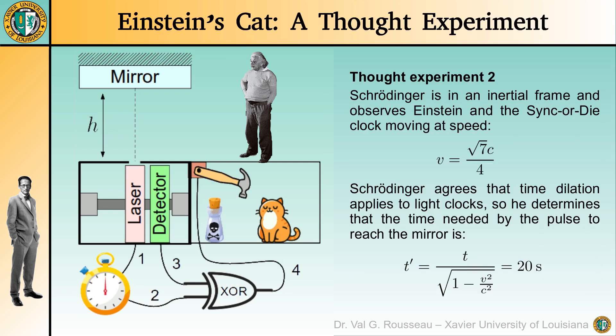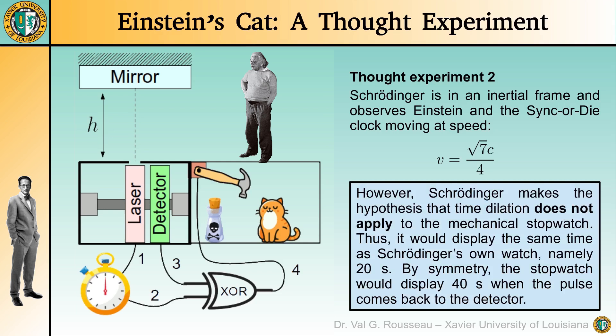The second experiment is the same as the first one, but this time it is Schrodinger who makes the observation from an inertial frame in which both Einstein and the sync-or-die clock are moving at speed v, which we choose to be equal to square root of 7 quarters of the speed of light. Schrodinger knows how simple the derivation of the time dilation formula is, so he agrees with it and finds out that it takes a time of 20 seconds for the pulse to reach the mirror. However, he makes the hypothesis that time dilation does not apply to the stopwatch. Thus, according to this hypothesis, the stopwatch should read the same time as Schrodinger's own watch when the pulse reaches the mirror, namely 20 seconds. By symmetry, the stopwatch should display a value of 40 seconds when the pulse comes back to the detector. Let us see if this makes sense.